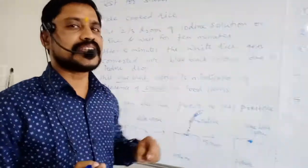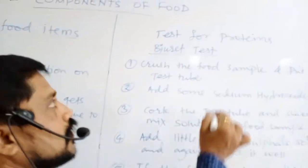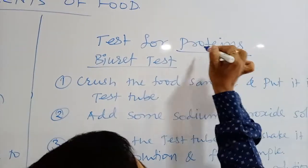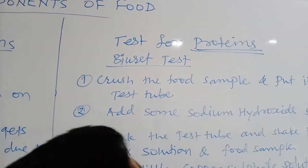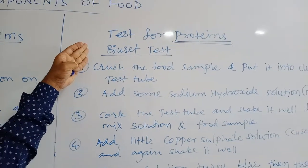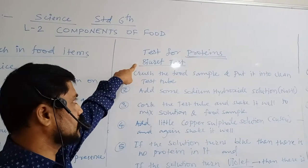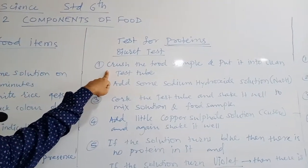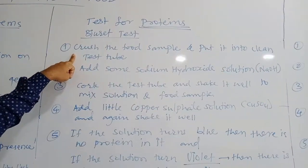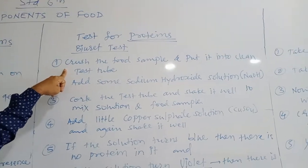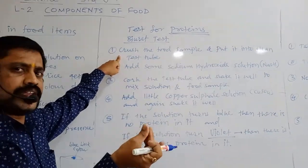Now we will go for the test for proteins. Test for proteins in the food items with the help of biuret test. The things are needed. We need protein powder or you can take the powder of pulses. Any pulse.